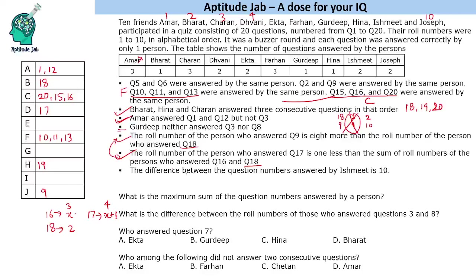The difference between the two question numbers answered by Ishmith is 10. Checking all possibilities: 1 and 11 — 1 is already filled; 2 and 12 — both taken; 3 and 13 — both taken; 4 and 14 — possible! 5 and 15 — 15 is taken; 6 and 16 — 16 is taken; 7 and 17 — taken; 8 and 18 — taken; 9 and 19 — taken. So the only valid option is questions 4 and 14. Ishmith answered questions 4 and 14.